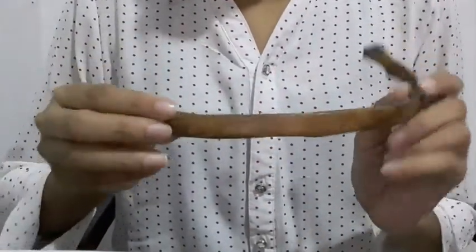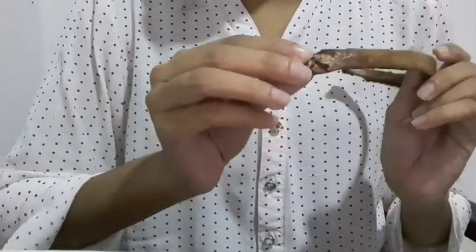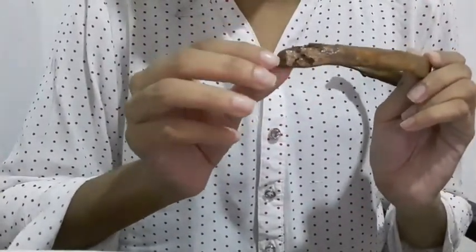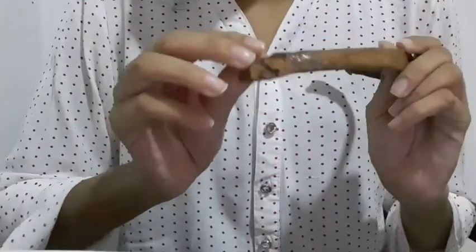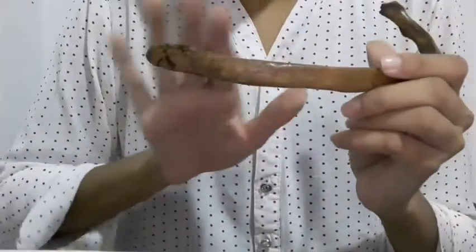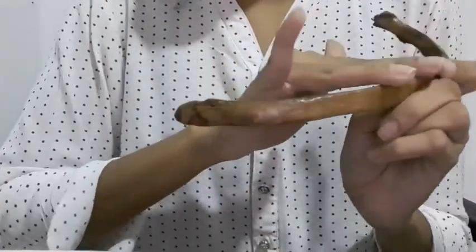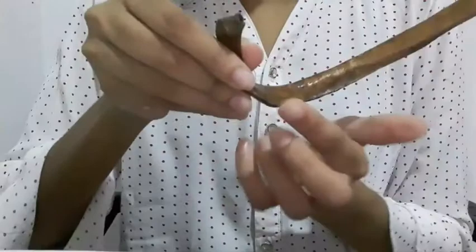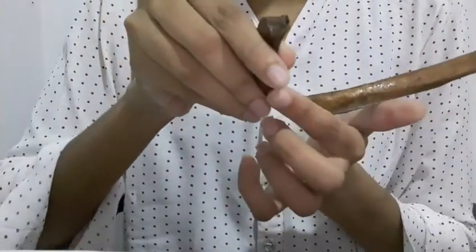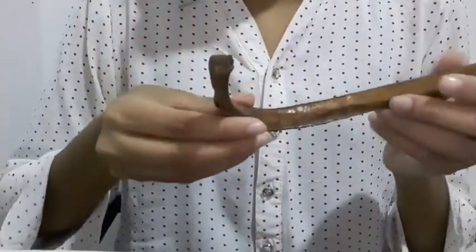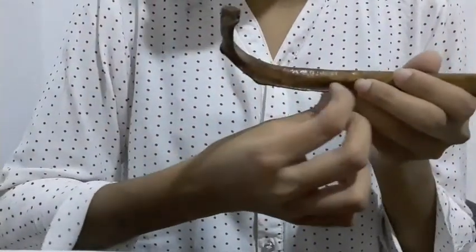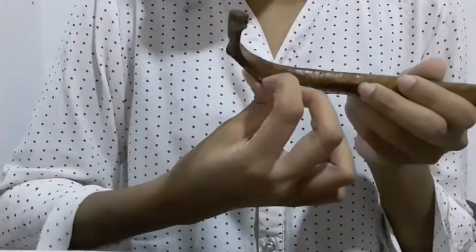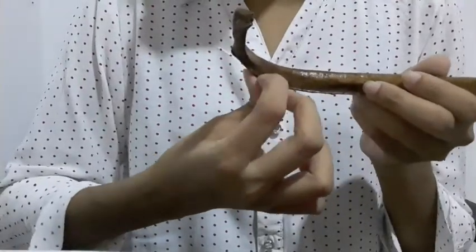This is the anterior end. It inserts with the corresponding costal cartilage. The superior border of the rib is rounded and smooth. The inferior border of the rib is sharp and thin. It has the costal groove and it accommodates the intercostal vessels and nerves.